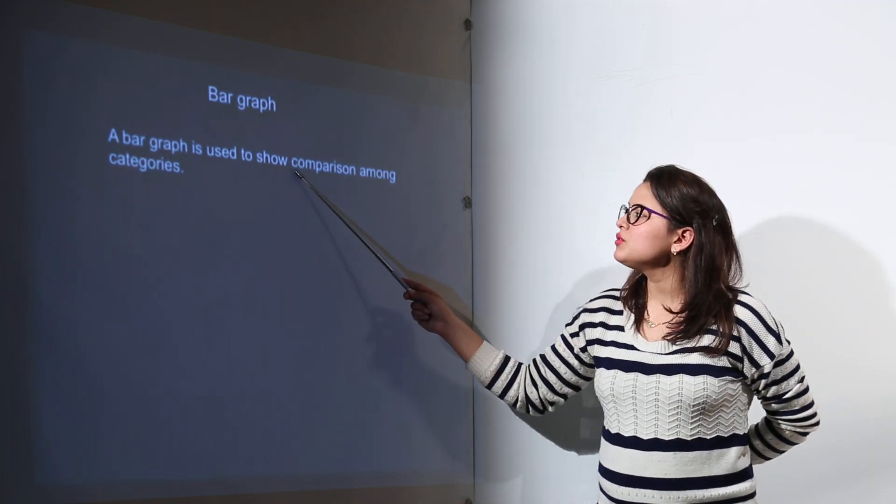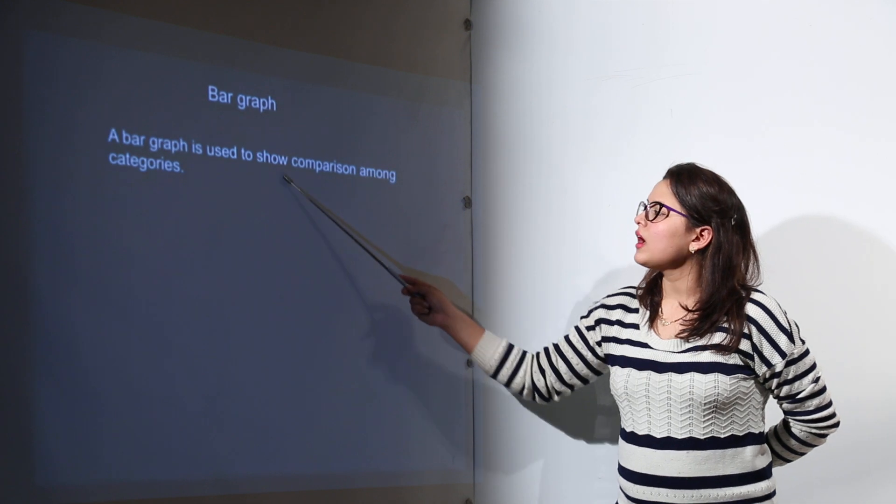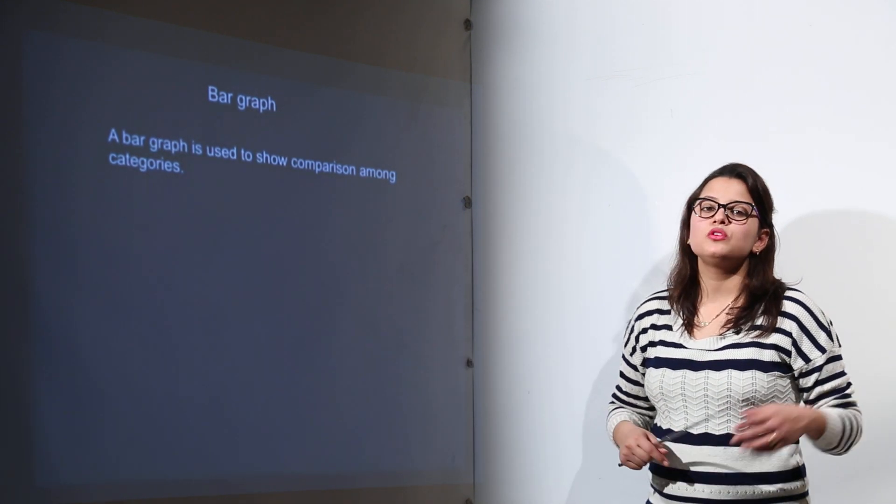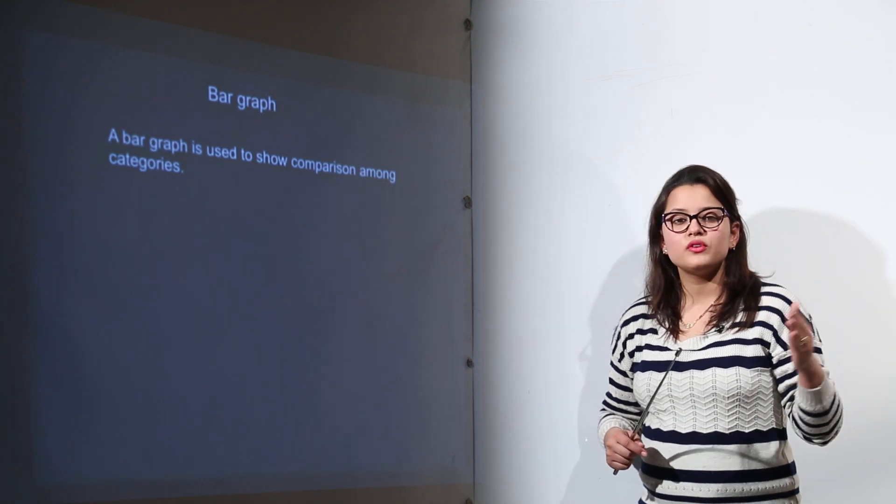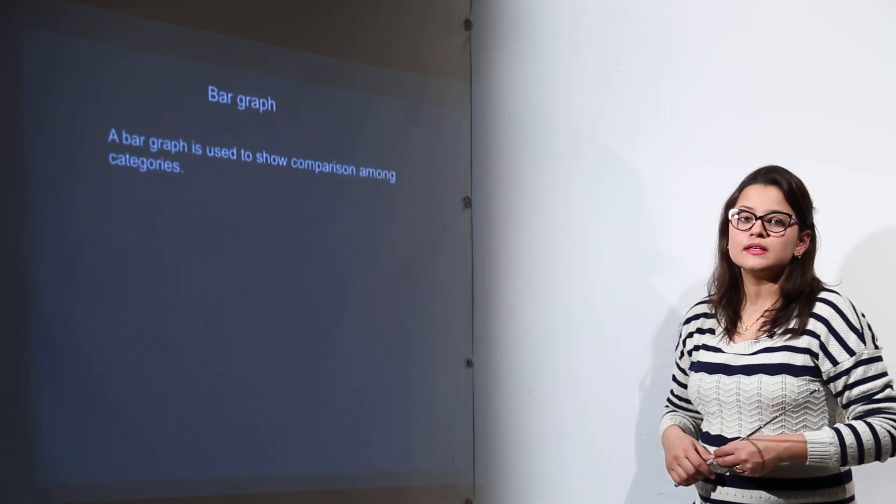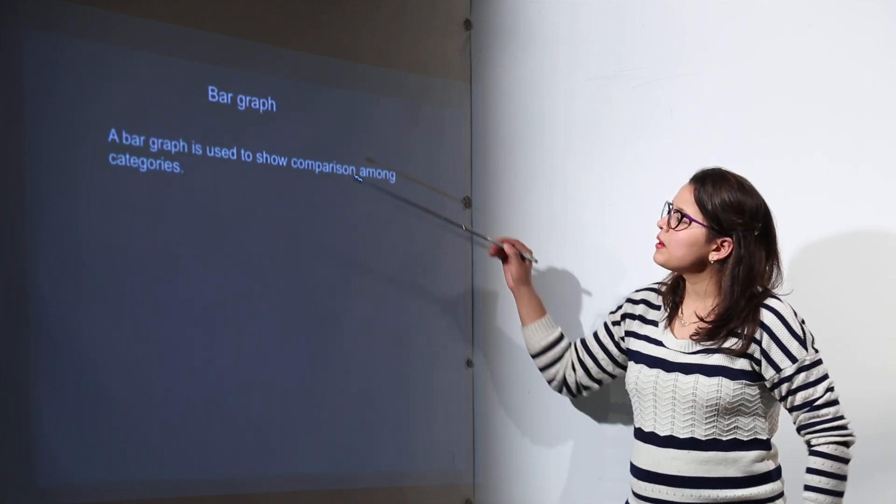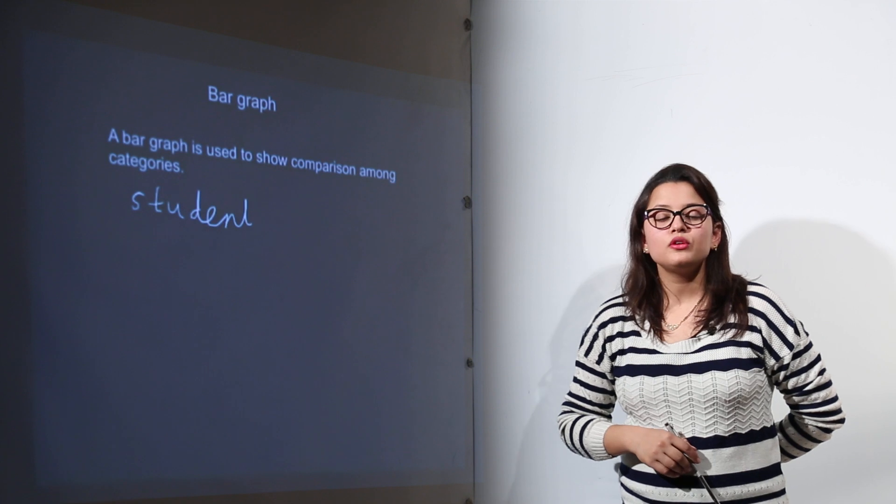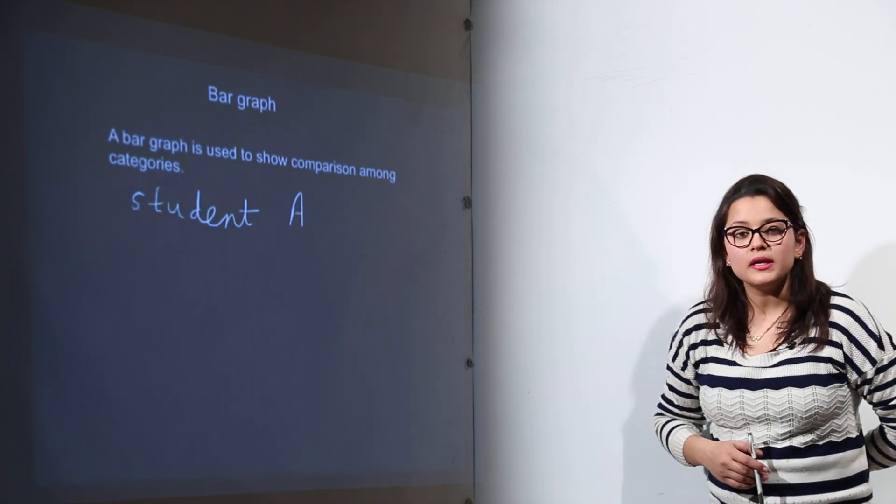A bar graph is basically used to show comparison among different categories. Now categories could be anything like you can compare marks of different subjects. For that we use the bar graph representation. Now I am taking up an example to show you how bar graphs are being made.